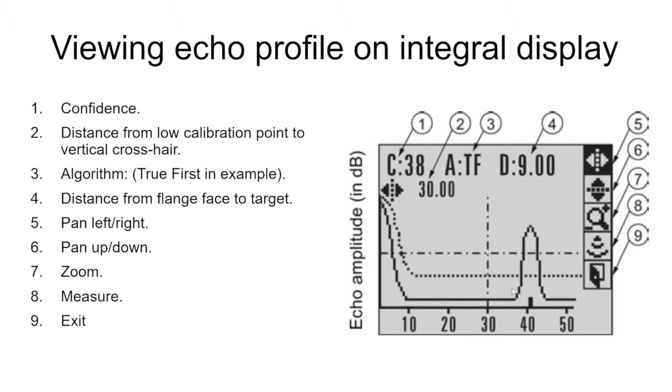To the right of that we have some buttons we can select by hitting the up or down arrow buttons of the hand programmer. We can use that to make the display pan left or right, pan up or down, and zoom into a certain part of the display. The eighth one down which looks like a little echo, by scrolling and hitting enter we take another measurement. Number nine is the exit.